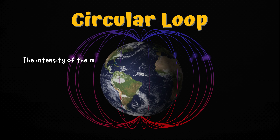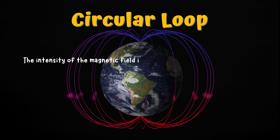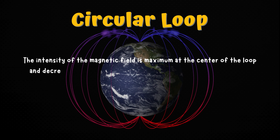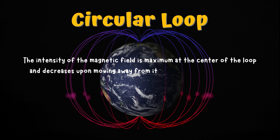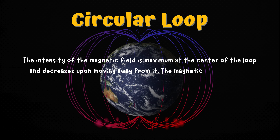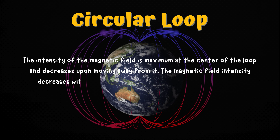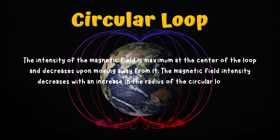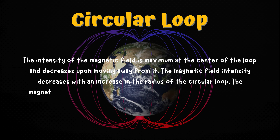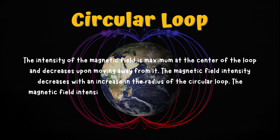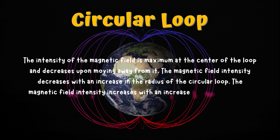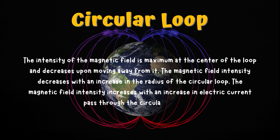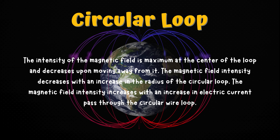Circular Loop. The intensity of the magnetic field is maximum at the center of the loop and decreases upon moving away from it. The magnetic field intensity decreases with an increase in the radius of the circular loop. The magnetic field intensity increases with an increase in electric current passed through the circular wire loop.